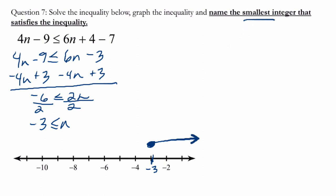Now, the smallest integer refers to the smallest - sometimes questions ask for the largest integer. So it's asking for the positive or negative whole number that fits. In this case, negative 3 is the smallest integer that fits.